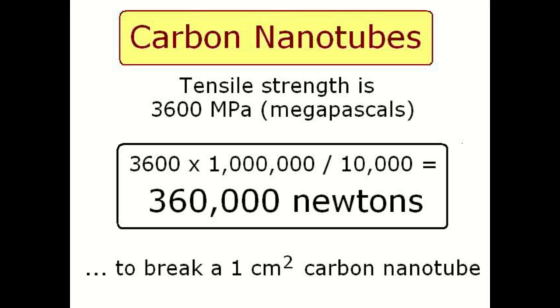A Pascal is a measure of force per unit area. It's one newton per square meter. A megapascal is one million newtons per square meter. So a long piece of carbon nanotube with a cross-section of one square centimeter will take a force of 3600 times 1 million divided by 10,000 which is the square centimeters in a square meter equals 360,000 newtons to break it.